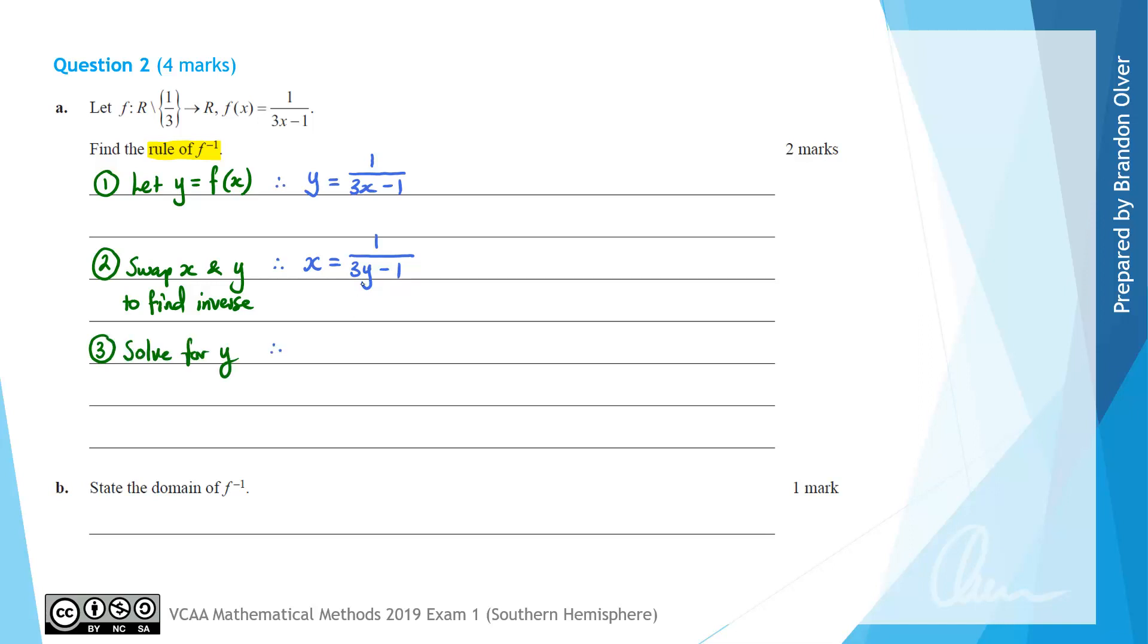The first thing I'm going to do is multiply by the 3y subtract 1 that's in the denominator of that fraction so everything is on one line. After doing that we'll have x multiplied by 3y subtract 1 in brackets, and those brackets are important.